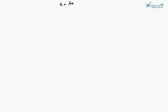We know that T is equal to T0 under root 1 minus V square upon C square. This is equation number 5th.